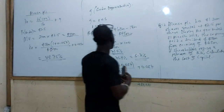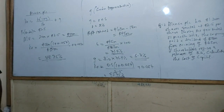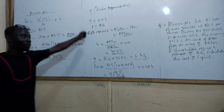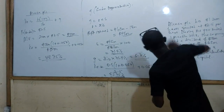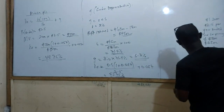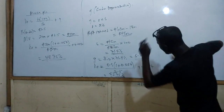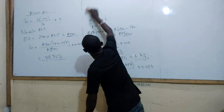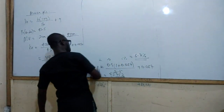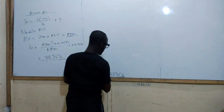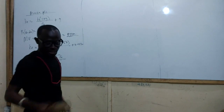Either way you go, the growth rate is calculated the same way. There is no other way to calculate it for such questions. That is the only method for this type of question in the dividend formula for calculating KE.